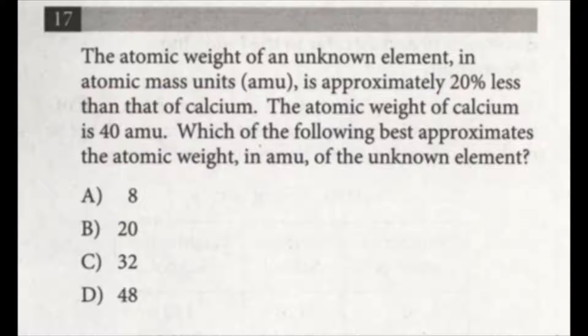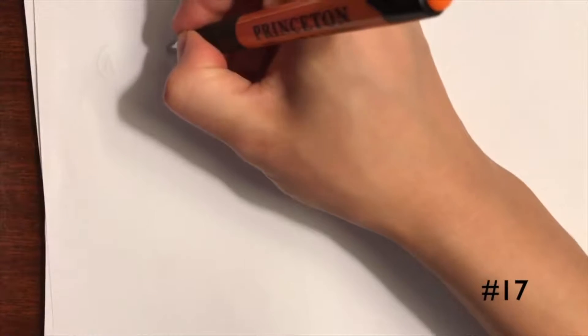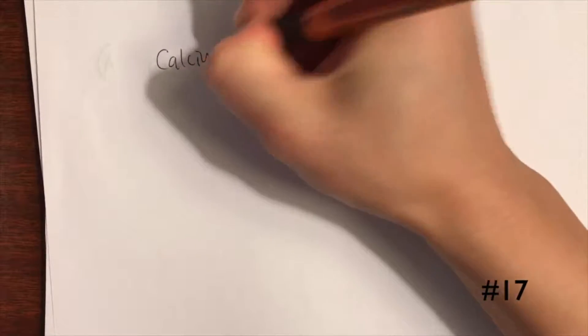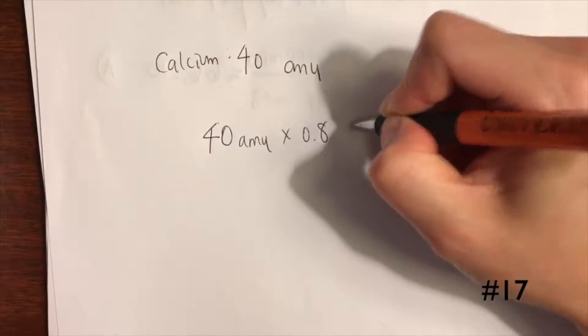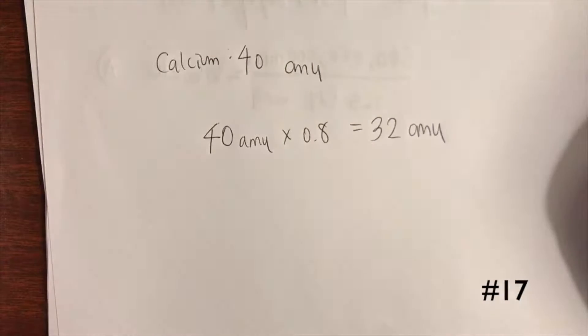The atomic weight of an unknown element in atomic mass units is approximately 20% less than that of calcium. The atomic weight of calcium is 40 amu. Which of the following best approximates the atomic weight in amu of the unknown element? We know the atomic weight of calcium is 40 amu, and we want to find the weight of the unknown element that's approximately 20% less. When we say 20% less, it also means the unknown element is 80% of the weight of calcium. So we do 40 amu times 0.8, giving us 32 amu.